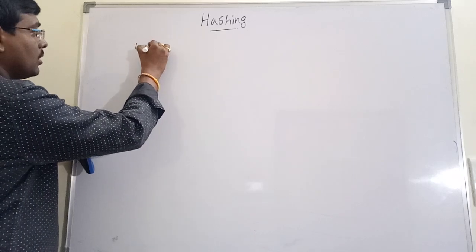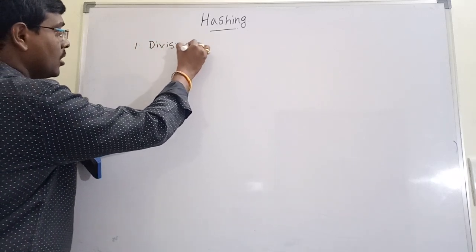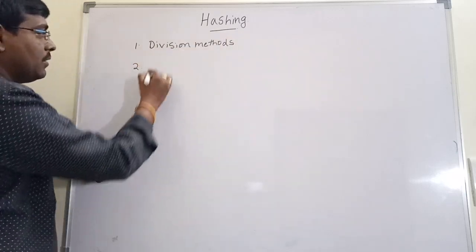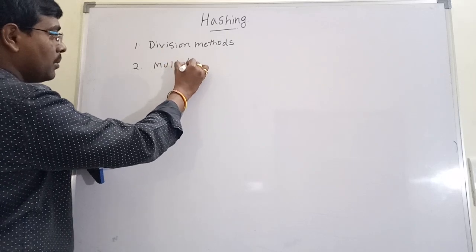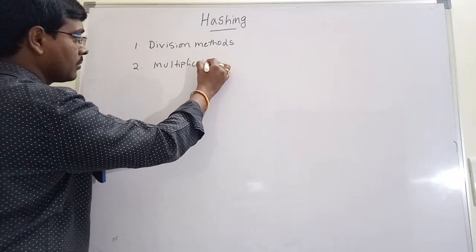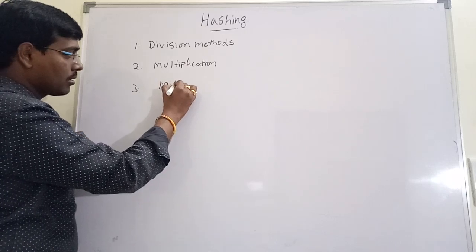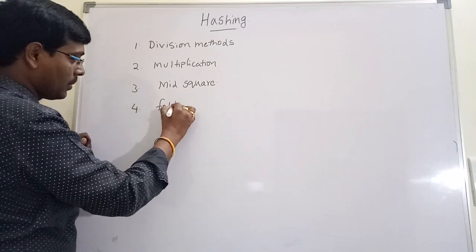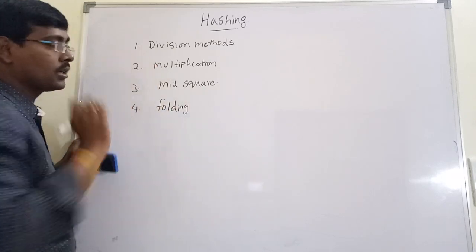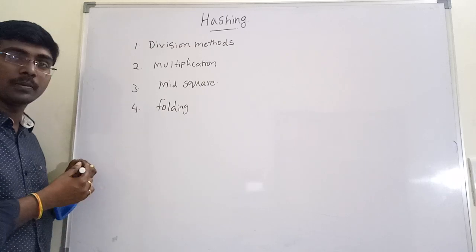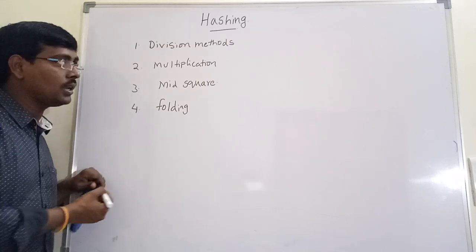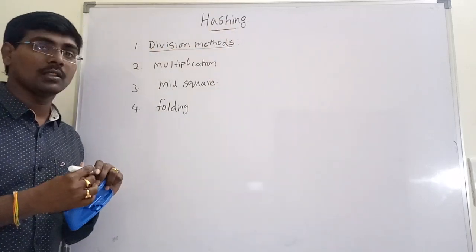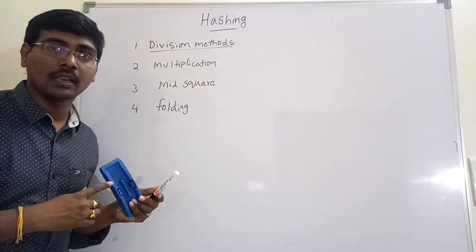We have many hash functions. Some of them are: division method, multiplication method, mid-square method, and folding method. The most popular and easiest method is the division method, where 90 percent of algorithms use the division method for placing records into the hash table.